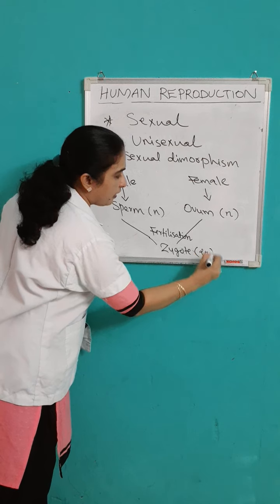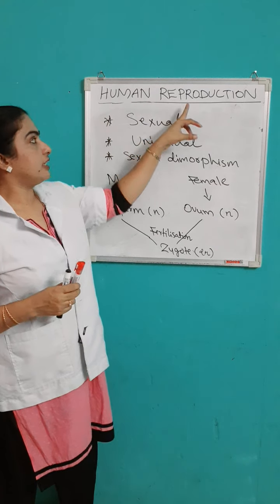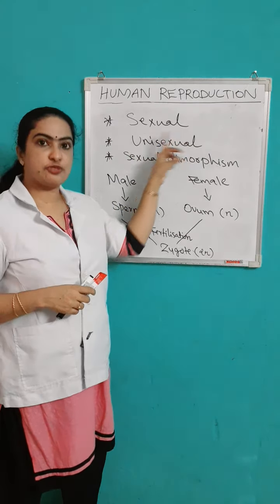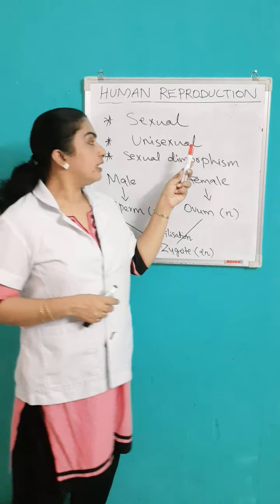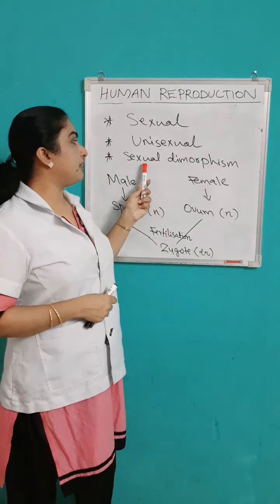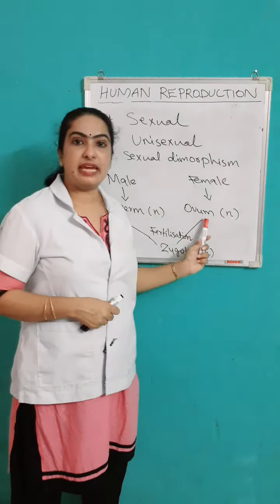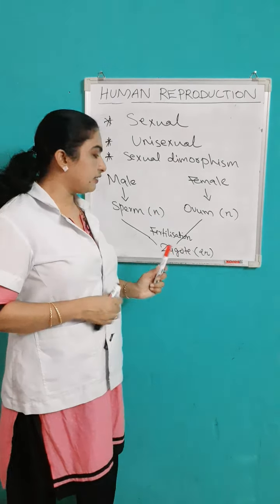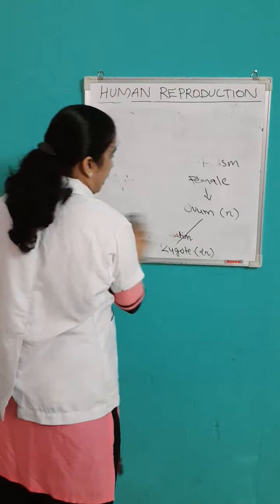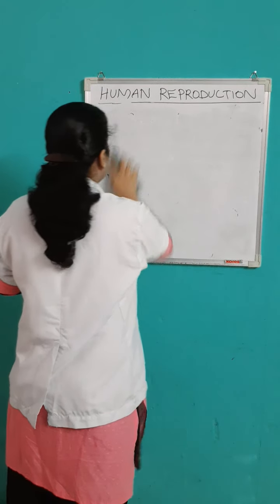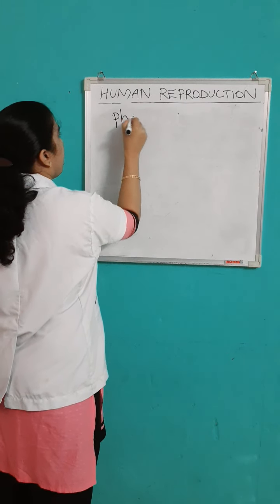The zygote is diploid in nature. In human reproduction, the mode of reproduction is sexual, in which both male and female parents are involved. They show unisexuality, with separate sex organs, and show sexual dimorphism — they are physically different from each other. There is a fusion of both male and female gametes that results in the formation of a zygote. Now let's look at the important point of this chapter: the reproductive phases of human beings.